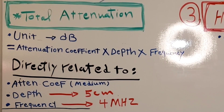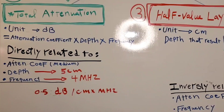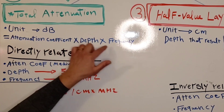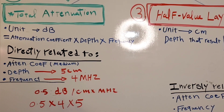Let's calculate total attenuation. If frequency equals 4 megahertz and the sound beam travels to a depth of 5 centimeters, how much is the total attenuation? If no attenuation coefficient is given, assume soft tissue, which is 0.5 decibels per centimeter per megahertz. Multiply: 0.5 times 4 times 5 — that's 4 times 5 equals 20, and 20 times 0.5 equals 10 decibels. Total attenuation is 10 decibels.